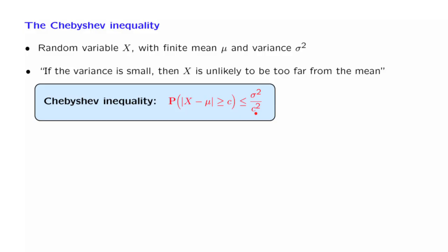By the way, I should add here that C is assumed to be a positive number. If C was negative, then the probability that we're looking at would be equal to 1 anyway, and there isn't any point in trying to obtain a bound for it. To prove the Chebyshev inequality,